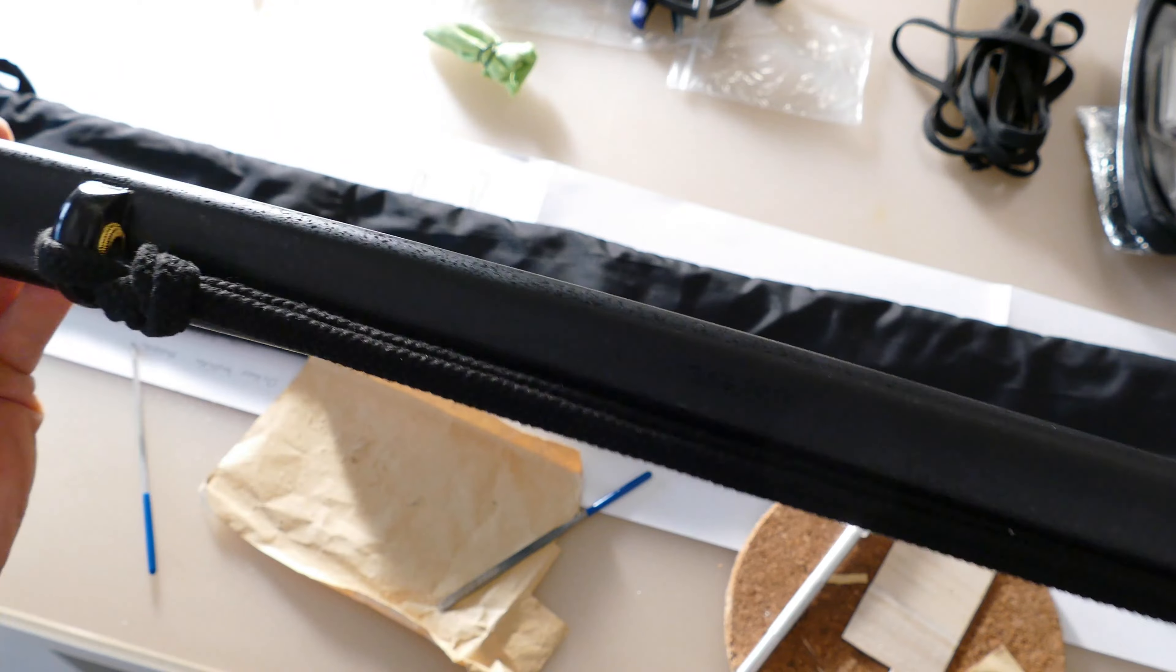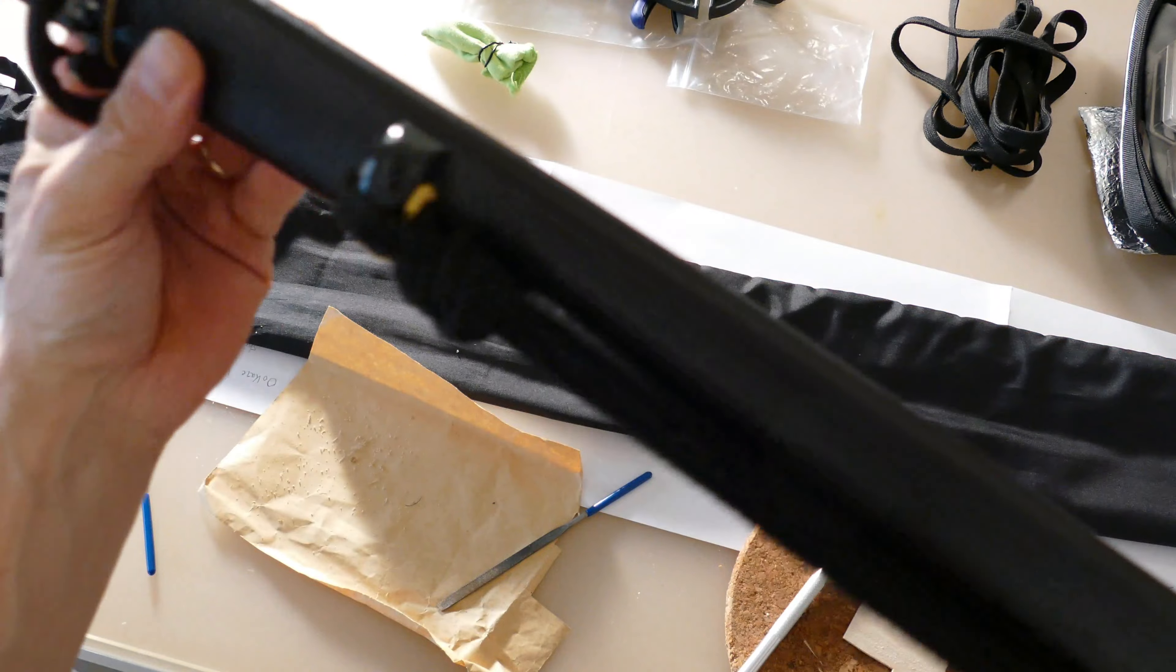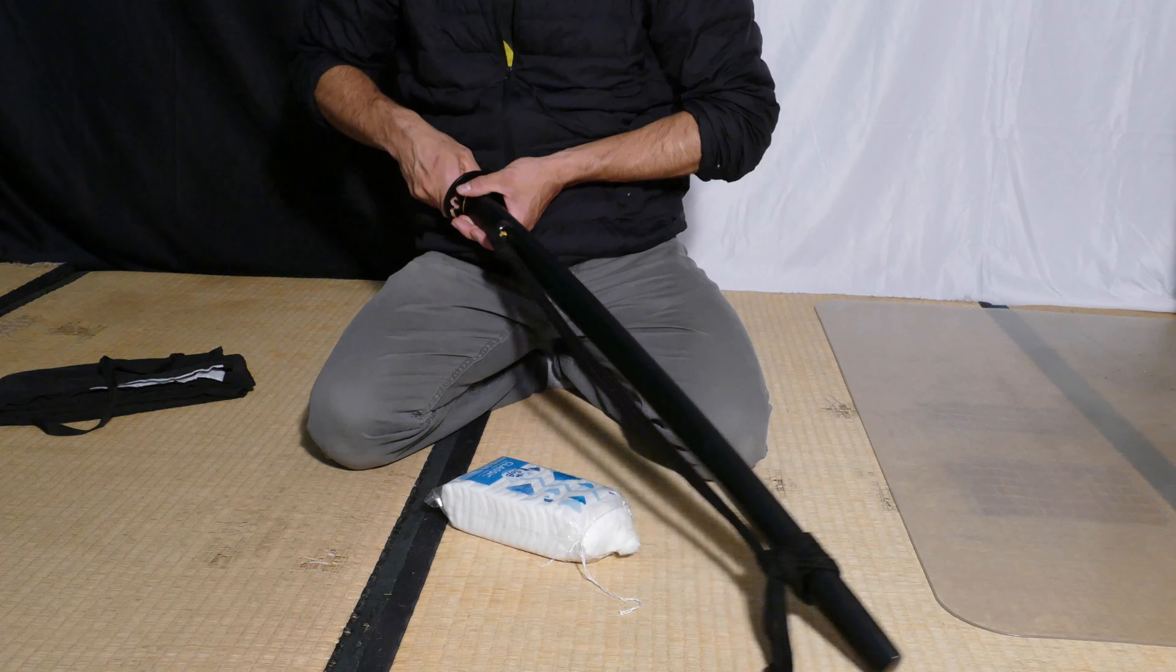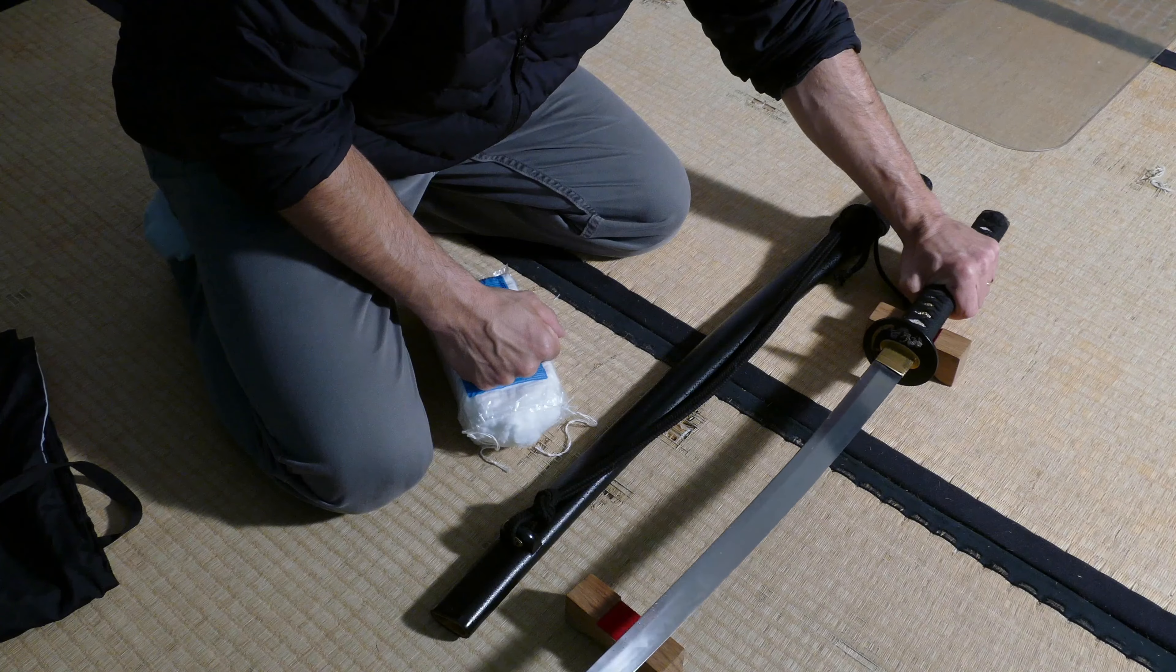We have seen before that the Okaze from Bushiden had a huge rattle on the width and on the height. So I decided to correct this aspect with the help of katanasamurai.com.